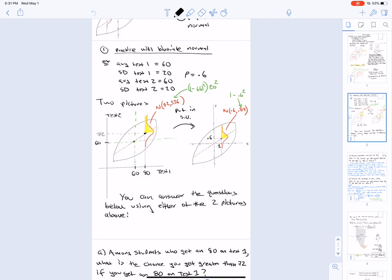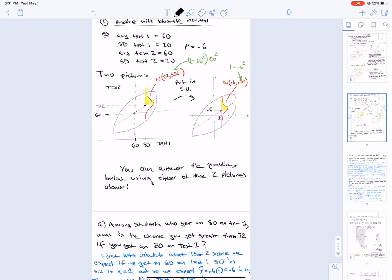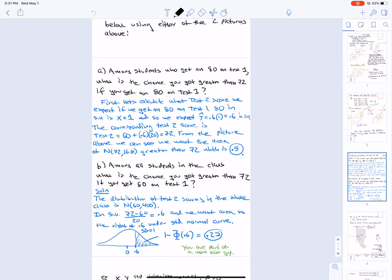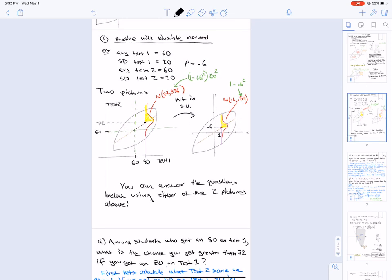Personally, the picture when you're in standard units is just so much easier because the slope is just Rho X instead of Rho times the SD of test 2 over the SD of test 1 X. So we're going to answer these questions among students who get an 80 on test 1. What's the chance that you get greater than 72 if you get an 80 on test 1?